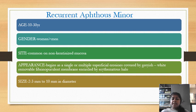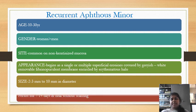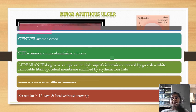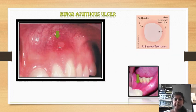The size is very small — 2 to 3 mm up to 10 mm in diameter. These are short-duration ulcers which persist for only 1 to 2 weeks and heal without scar formation. This photograph shows minor aphthous ulceration, where you can see the fibrinopurulent membrane covered with an erythematous halo.